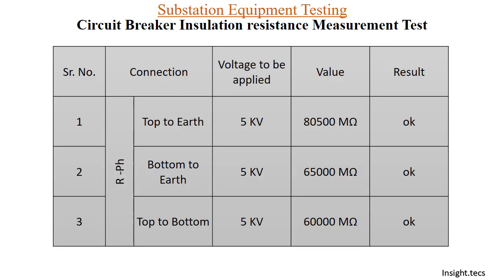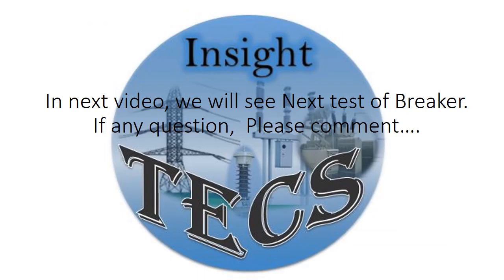We have made a table for all the readings taken. The type of connection for our phase: top to earth, bottom to earth, and top to bottom. The applied voltage is 5 kV in all three cases and these are the results obtained. This is the insulation resistance measurement test for a circuit breaker. In the next video, we will cover different kinds of tests for breakers. If you have any questions, ask in the comment section below. Keep watching our videos. Thank you.